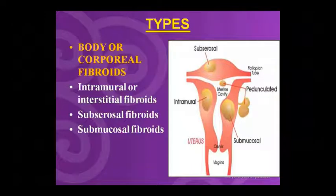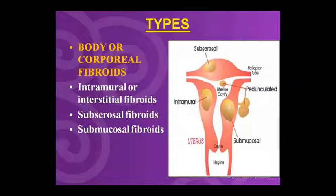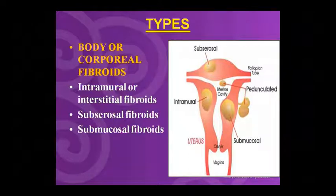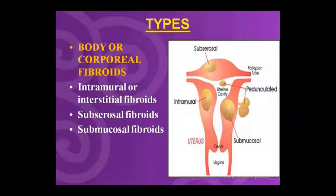The third type, subserosal fibroid, protrudes from the serosal surface of the uterus. In the picture of the uterus, when it has a stem-like stalk, it is called pedunculated fibroid.